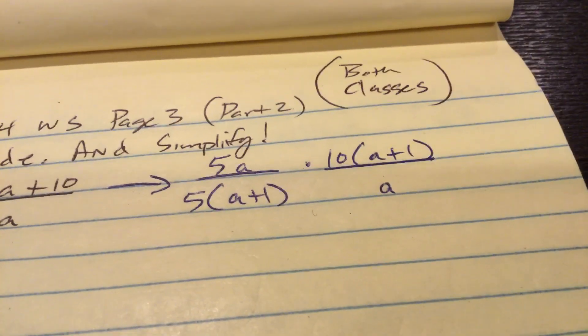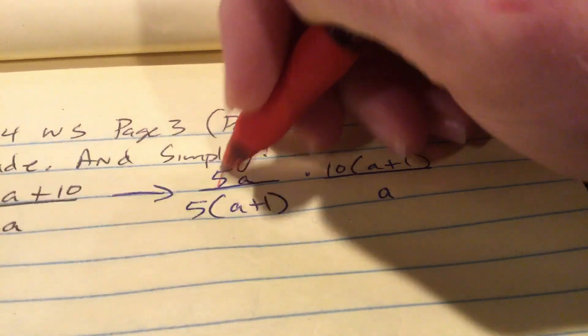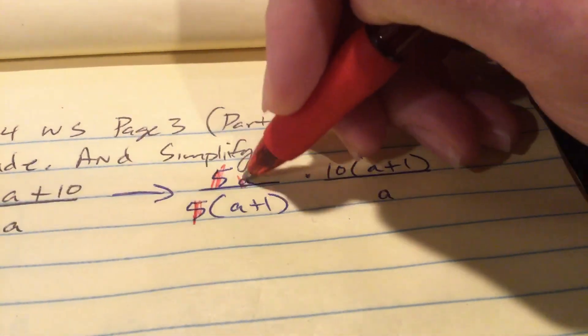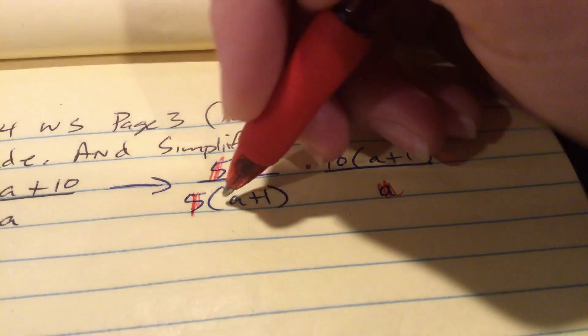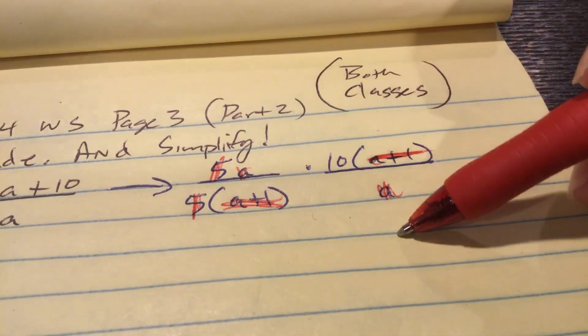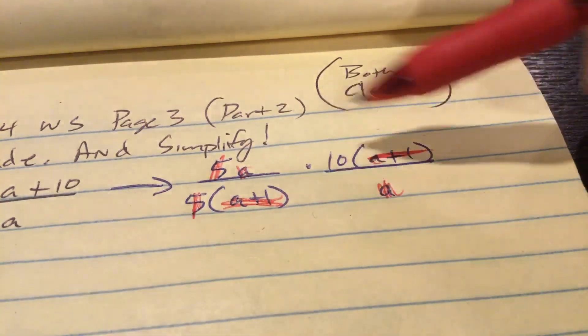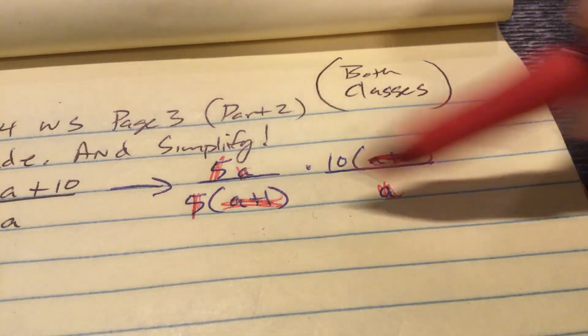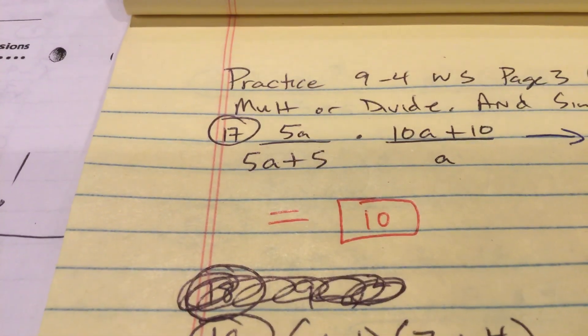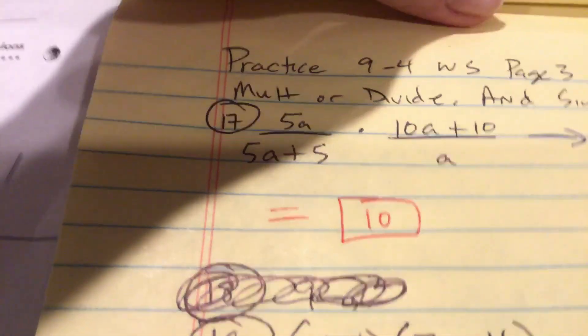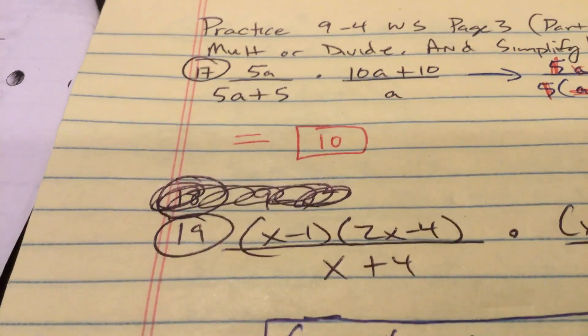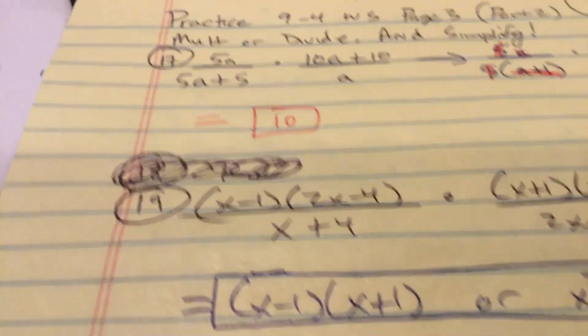10, I did that right there. Then it's cancel time. Notice first off, you have 5 over 5. Bye-bye. You have that A over A. Adios. Then you have A plus 1 over A plus 1. Now, they don't have to be directly above each other. Just one north, one south. The north cancels with the south. The north cancels with the south. The north cancels with the south. Alright, your answer is 10. That's the name of the game, folks. It's simplifying rational expressions involving multiplication and division.